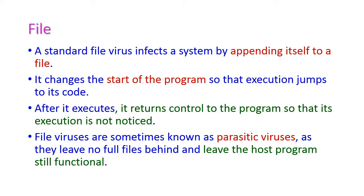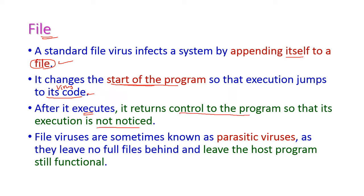The first category of virus is the file virus. The file virus appends itself to a normal program file, and it changes the starting of the program so that execution jumps to the virus code first.